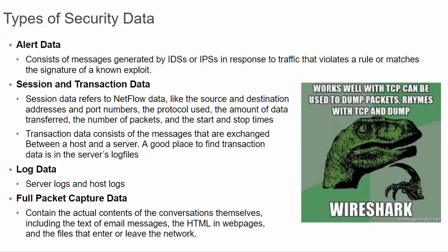The types of security data include alert data — messages generated by IDSs or IPSs in response to traffic that violates a rule or matches a known exploit signature — and session and transaction data. Session data refers to NetFlow data: source and destination IP addresses, port numbers, protocol, amount of data transferred, packet count, and start/stop times. Transaction data consists of messages exchanged between a host and a server, found in server log files. Log data covers server and host logs. Full packet capture data contains the actual contents of conversations, including email text, HTML from web pages, and files entering or leaving the network.